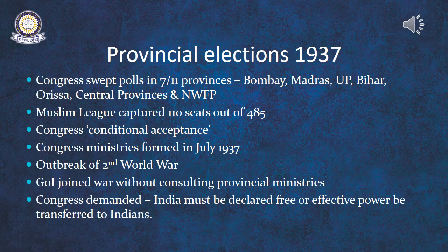The Government of India Act 1935 provided for greater autonomy for the provinces. It aimed at responsible government at the provincial level, and the ministries of respective provinces were made accountable to their legislature. The provincial elections under the new Government of India Act 1935 were held in February 1937. Although Congress initially rejected the constitutional reforms, after a hectic debate, it decided to contest the elections in 1937.